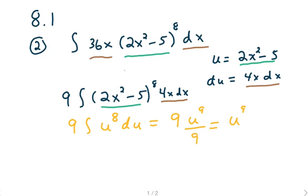When doing u substitution, it's important to change the entire x problem into a u problem. So what I've done here is I still have my 9 out front, and we have an integral now of instead of 2x squared minus 5, I have a u raised to the 8th power, and 4x dx turns into du.